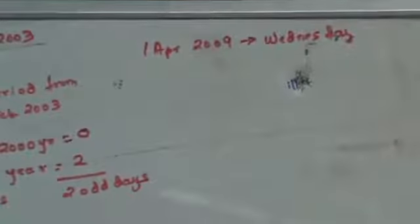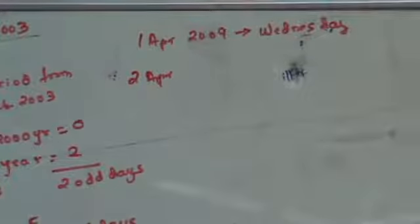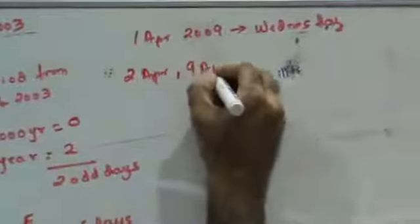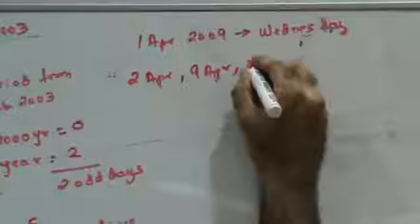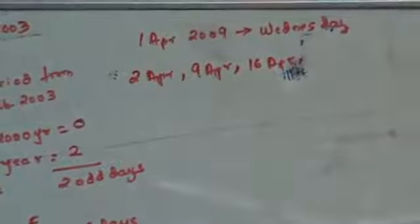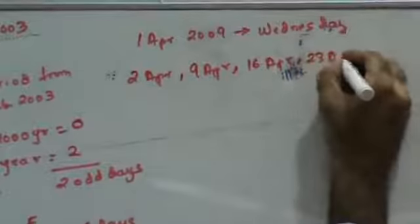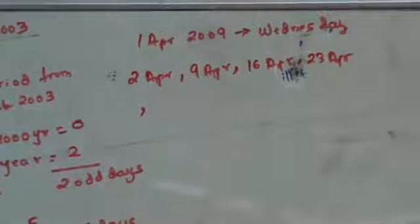But they asked about Thursday. If 1st April was a Wednesday, then 2nd April was a Thursday. Seven days later, 9th April was also a Thursday. Then 16th April, 23rd April, and 30th April were also Thursdays.